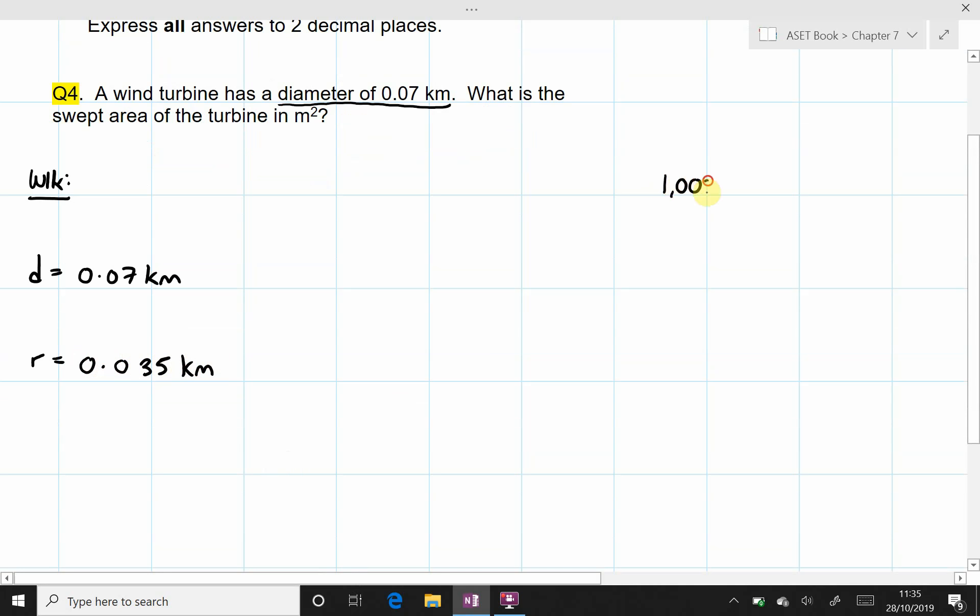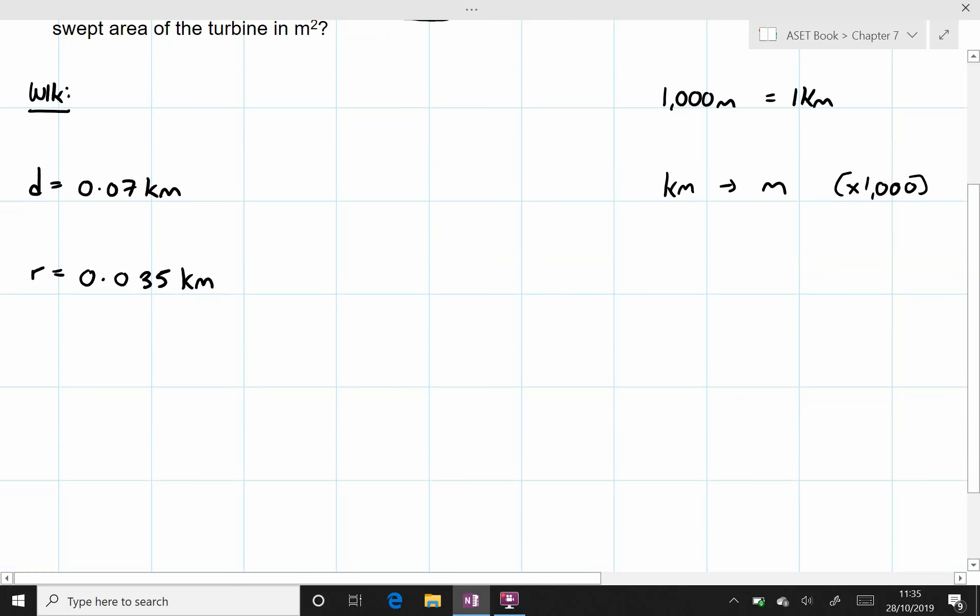Now there are 1000 meters in one kilometer. And so if we are looking to convert from kilometers into meters, we need to multiply that number by 1000. And so 0.035 kilometers is equal to 35 meters.